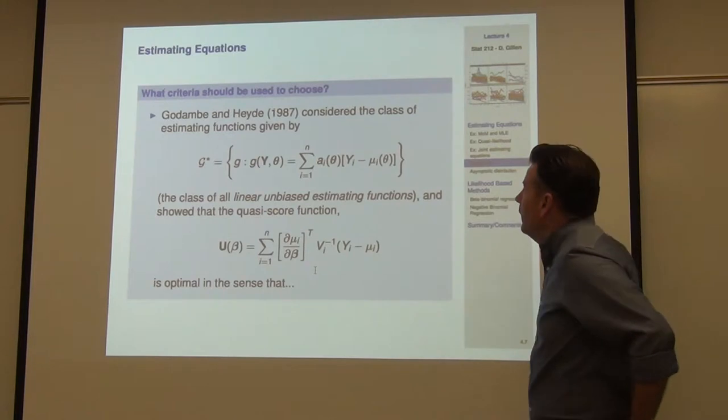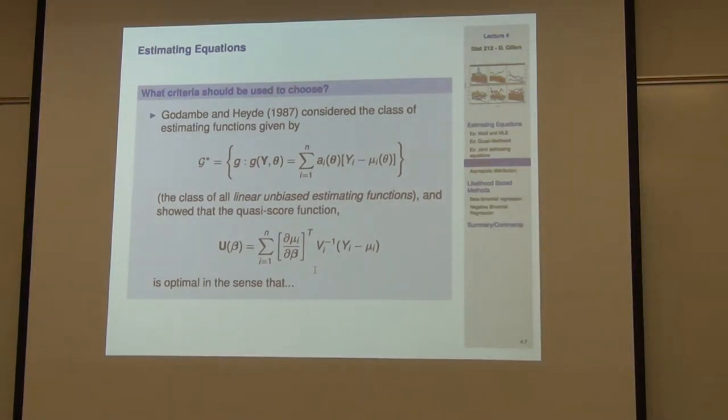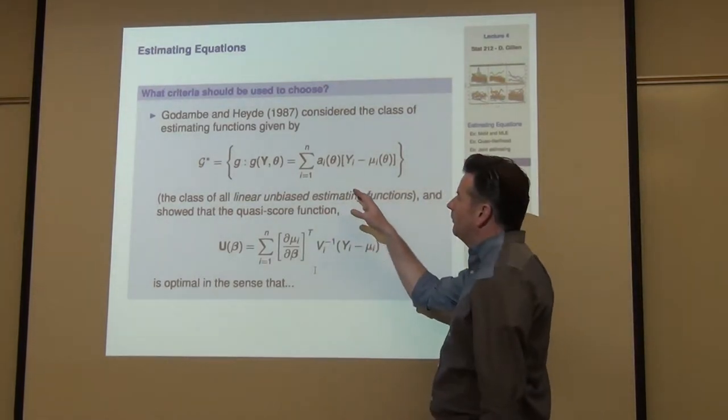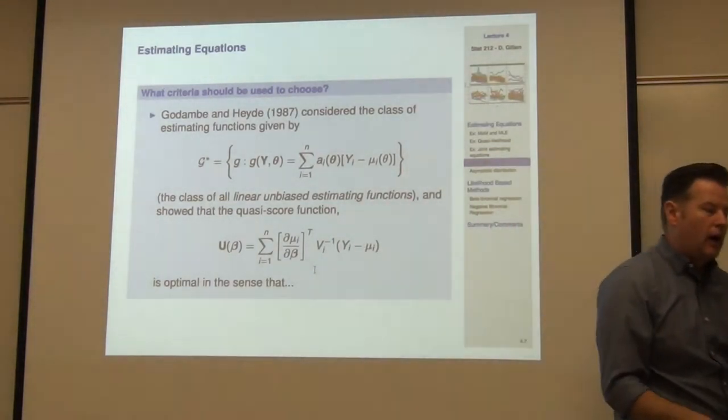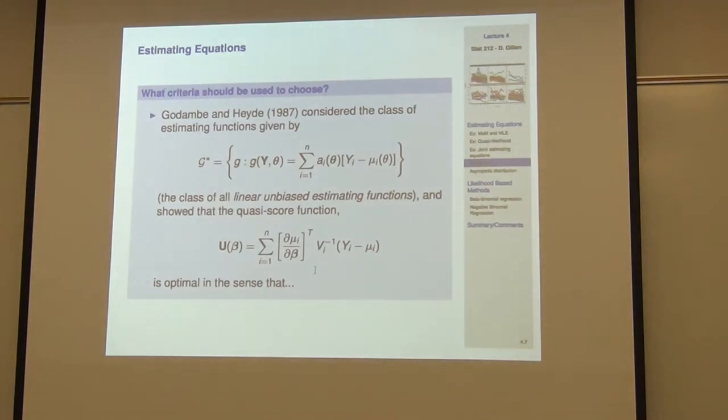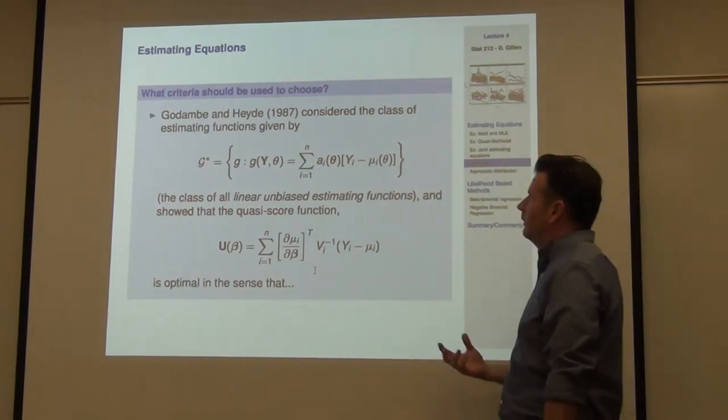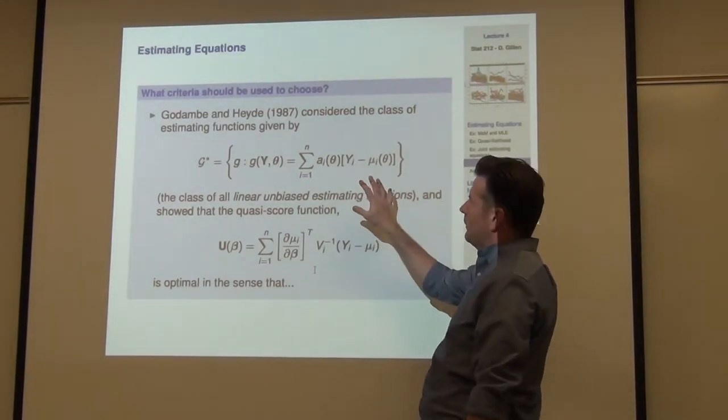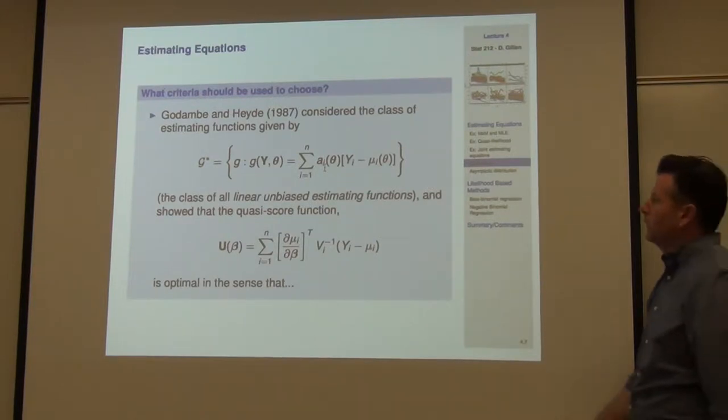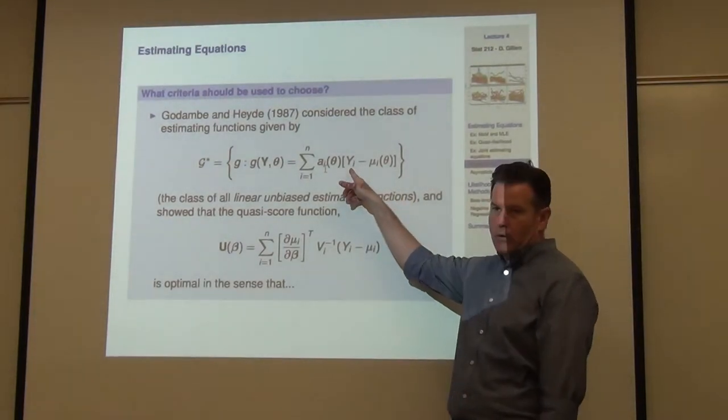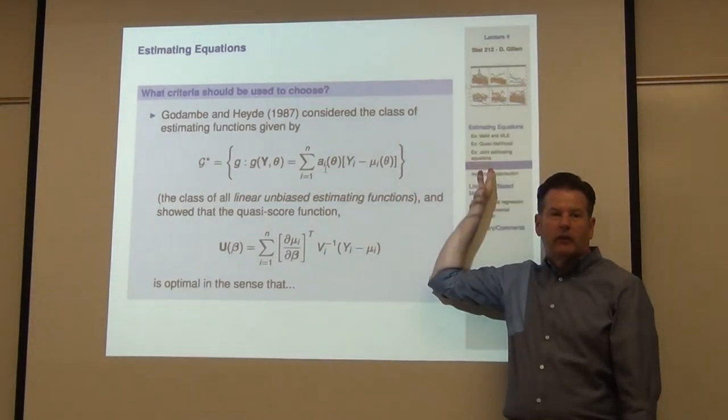So the question is, you basically have an infinite number of estimating equations that you can choose from, or estimating functions I should say. So the question is, how do you choose? A lot of the work that's been put in this is to try and think about, what are the optimality properties of particular classes of estimating functions? And so, Godambe and Heyde at '87, they said, let's consider a class of what they entitled linear unbiased estimating functions, which makes pretty good sense. It's linear in the y's. It's unbiased in the sense that if I take the expectation through, I get y minus its mean equal to zero.